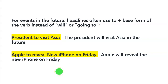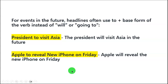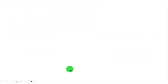'Apple to reveal new iPhone on Friday.' The correct sentence is 'Apple will reveal the new iPhone on Friday.' The newspaper version is shorter. This is how the simple future tense is conveyed in newspapers, and it can get very confusing if you are at the beginner level.